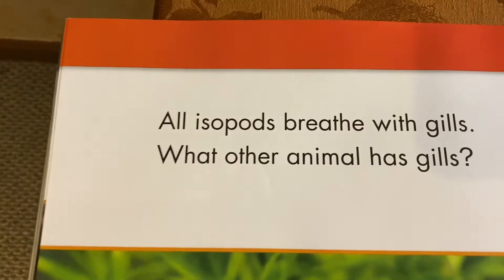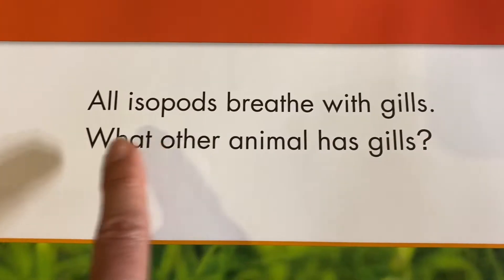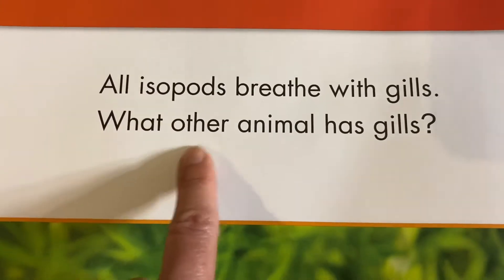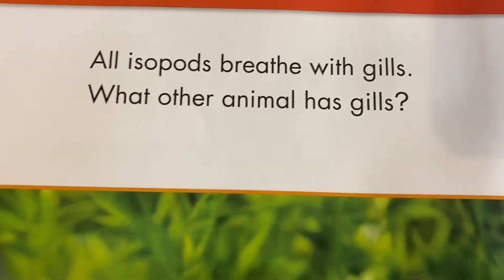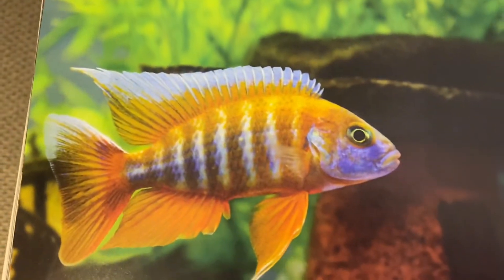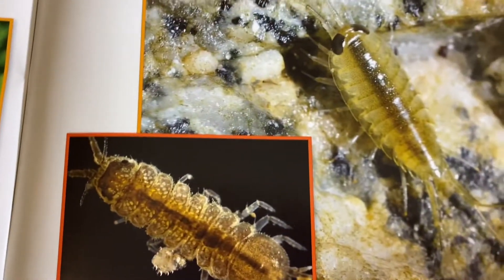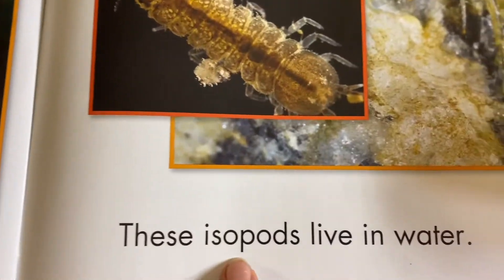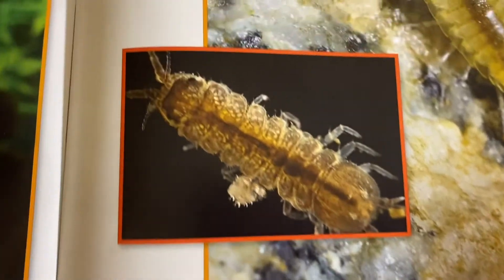All isopods breathe with gills. What other animal has gills? Do you remember? The fish had gills. These isopods live in water. Take a look.